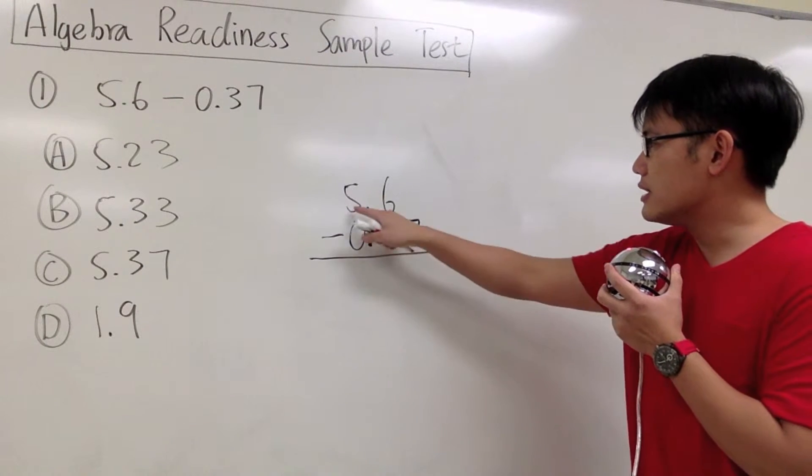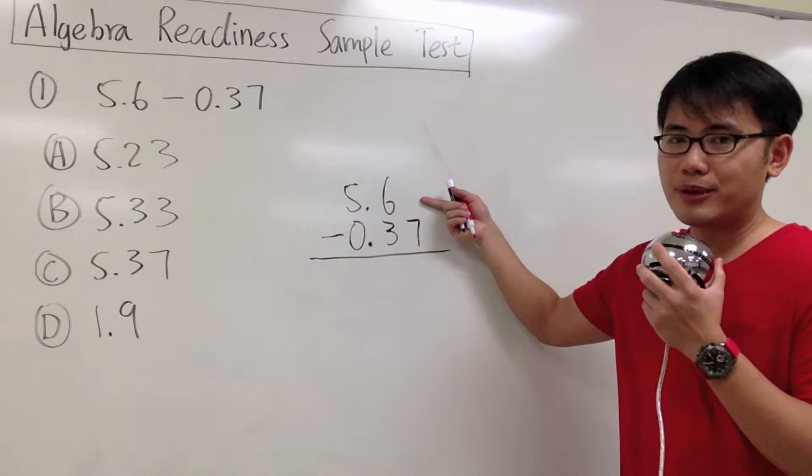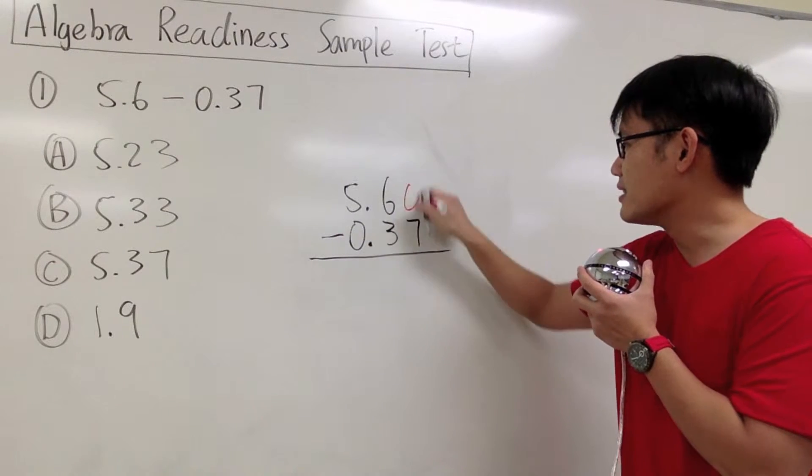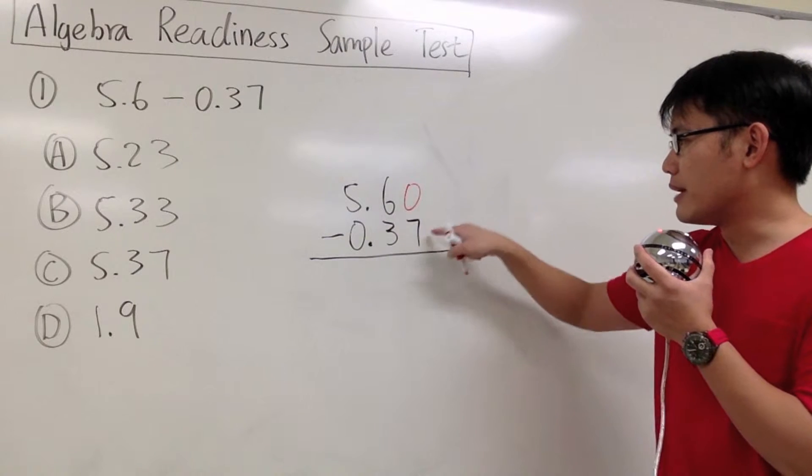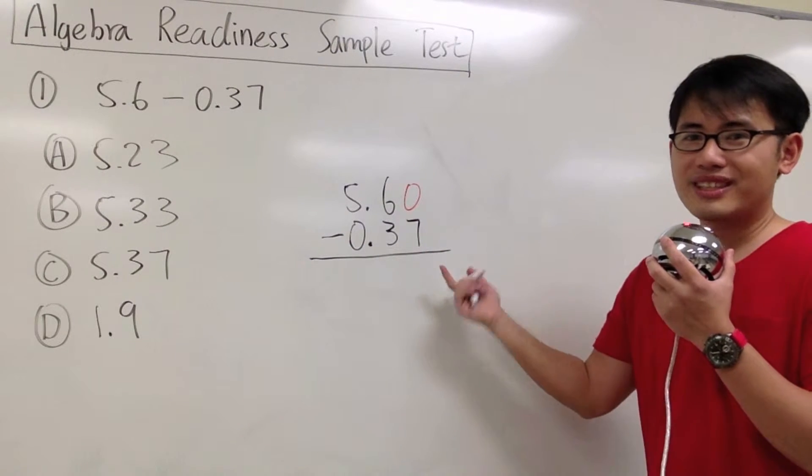On the top right here, this is 5.6, but I'm missing a number here. This is technically a 0. And then we'll just subtract. But what's 0 minus 7? Doesn't really work. We have to borrow.